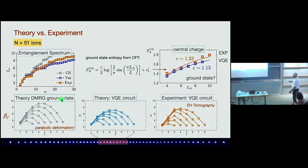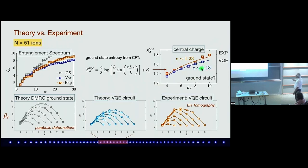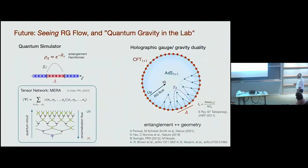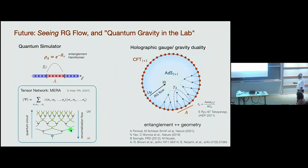Here is a summary: in theory the ground state shows the parabola; if you do the VQE circuit theoretically, it is a little flatter because it is 'hotter.' Then we have the experiment, which is the VQE circuit for a relatively small system. This was the attempt to extract the central charge, but it has finite temperature and finite width. At the moment it is 1.1 or 1.2 — something to be improved. I always like to show this because it shows where we would like to go in the future.